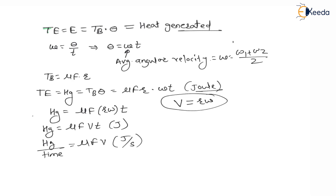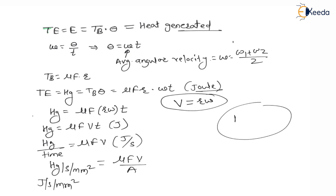If I want to find heat generated per second per unit area, divide by area. Since pressure P = F/area, substituting gives: heat generated per unit time per unit area = mu·P·V, with units of Joules per second per mm².